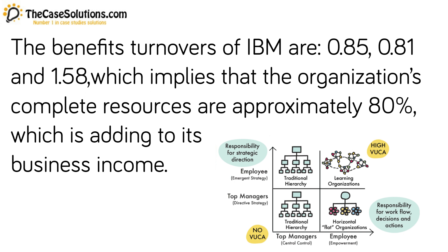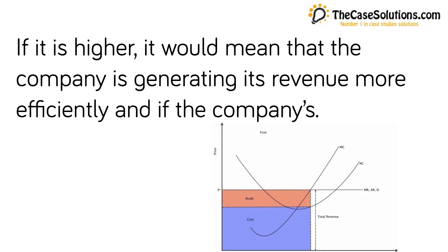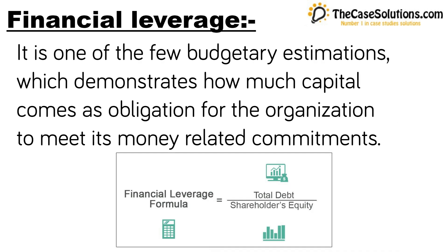The asset turnover ratio is in a sound position. If it is higher, it means the company is generating revenue more efficiently. If the company's asset turnover ratio is normal, it means the company is generating normal profit as compared to its assets.